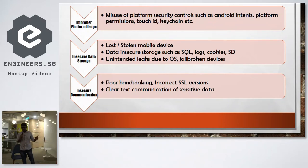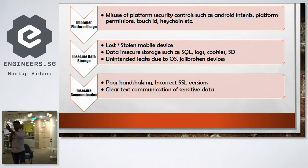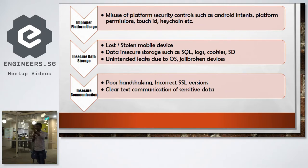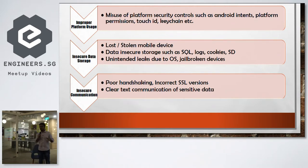To test insecure data storage: set up an emulator, run the application, then in the background go to the SD card and read what data is stored in the respective application folder. Look for SQLite databases, log files, and cookies. Check whether any sensitive data is stored in plain text. This is the testing methodology we will demonstrate hands-on in upcoming sessions.